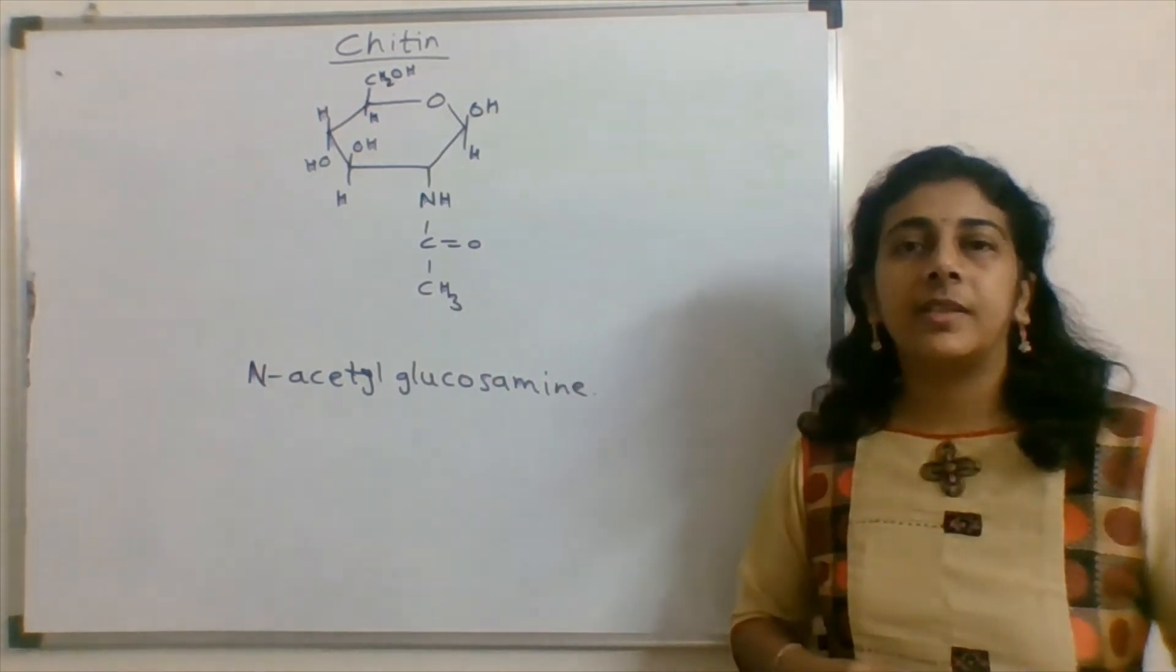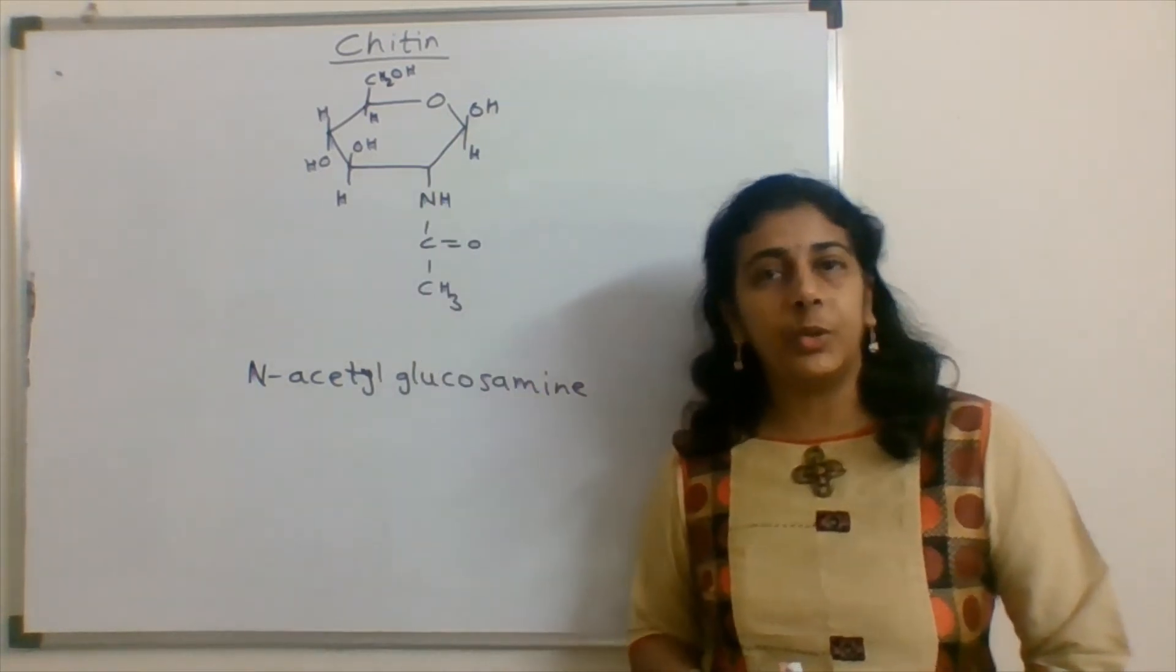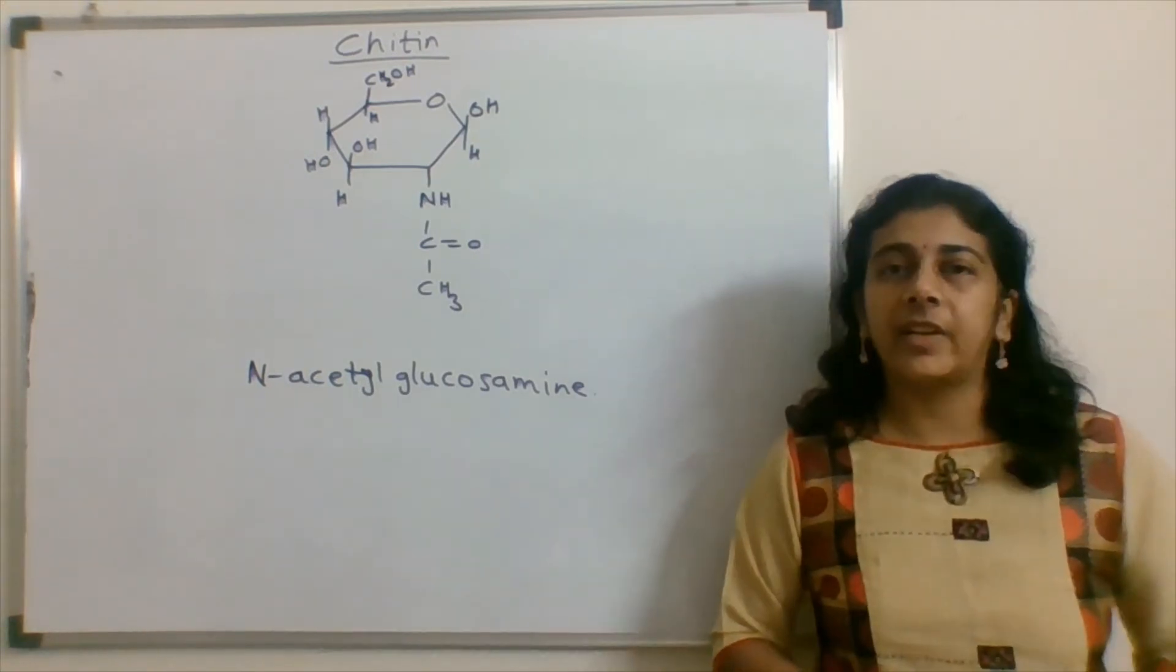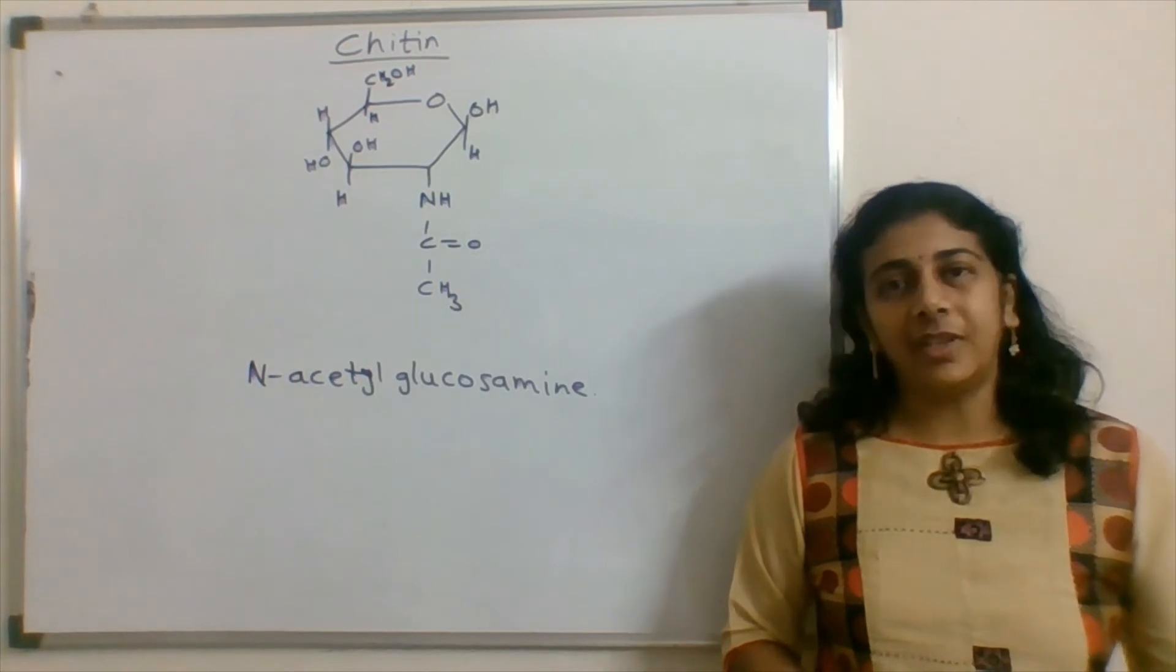In case of cellulose, there is a presence of hydroxyl group at this carbon-2 position. So combining these residues, the structure of chitin is formed, and the bond is beta-1,4 linkage.